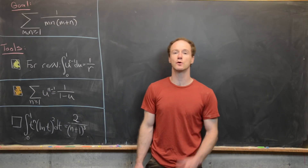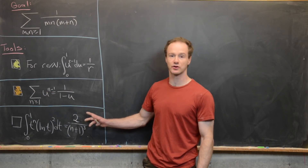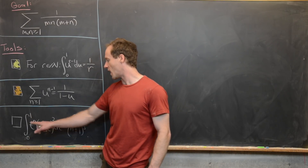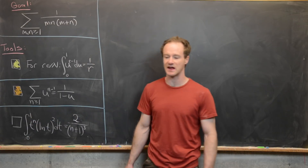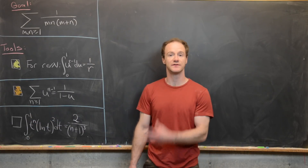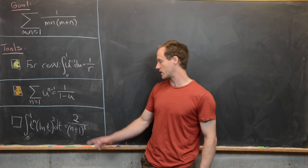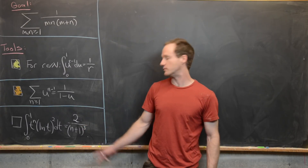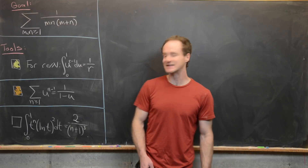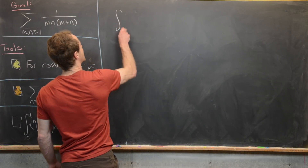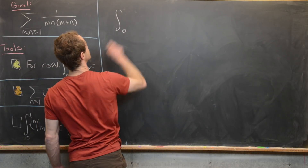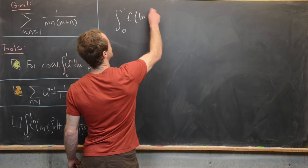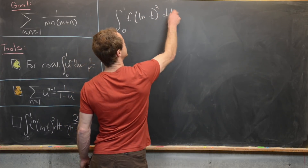The last tool, which we will prove, is this integral: the integral from 0 to 1 of t to the n times the natural log of t quantity squared dt equals 2 over n plus 1 quantity cubed. Let's get to proving this — we have the integral from 0 to 1 of t to the n times the natural log of t quantity squared dt.